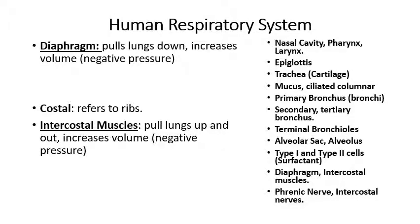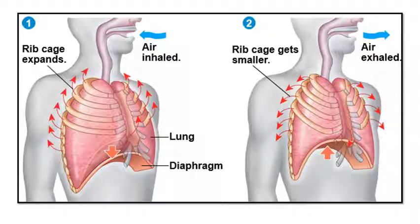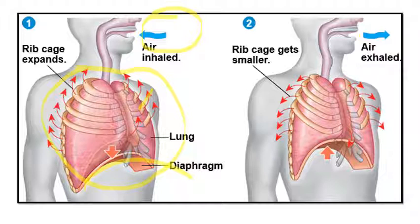The diaphragm pulls the lungs down to increase the volume, and the intercostal muscles — the word costal refers to the ribs, so intercostal means the muscles in between the ribs — pull the rib cage upwards and outwards, increasing lung volume and creating negative pressure. The phrenic nerve controls the diaphragm; the intercostal nerves control the intercostal muscles. When you relax the intercostal muscles and the diaphragm again, the air goes out spontaneously due to elastic recoil.